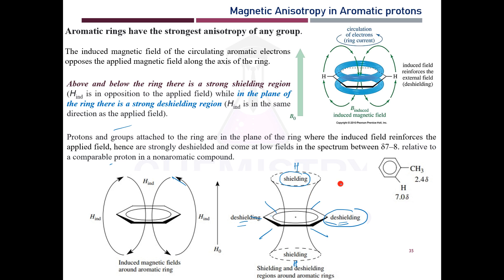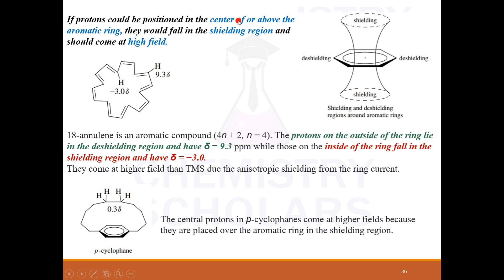All benzene ring protons are in the plane, which is why they appear highly downfield. Any group attached to the benzene ring that is in the plane will also appear downfield. Normally CH3 appears at around 0.8 to 1.2 ppm, but when attached to a benzene ring it appears downfield at 2.4 ppm. When protons are above or below the plane they experience less magnetic field because the induced field is in the opposite direction.